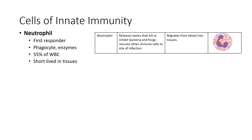Now let's look at the cells of the innate immune system. Our first responder and the most abundant white blood cell is the neutrophil. Neutrophils are phagocytic cells, which means they can engulf and degrade debris or microorganisms, and they release powerful enzymes that can kill or inhibit bacteria and fungi. They also function to recruit other immune cells to the site of infection — they're very much like an emergency responder. Neutrophils are circulating in the blood and they migrate into the tissue upon initiation of the inflammatory response.